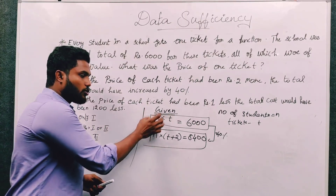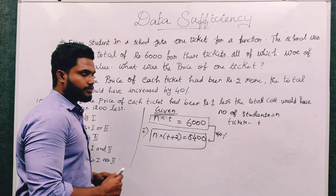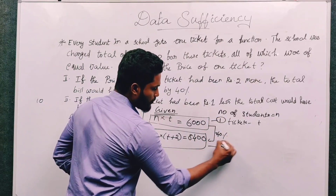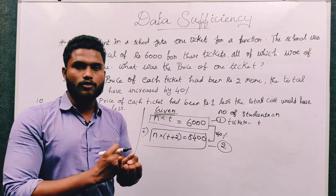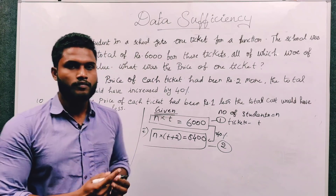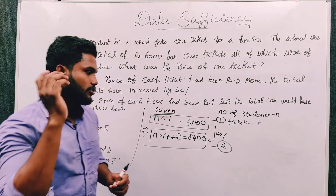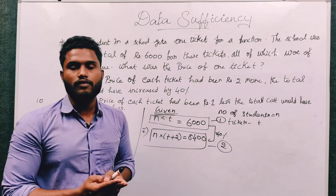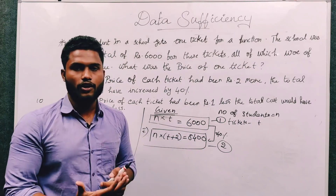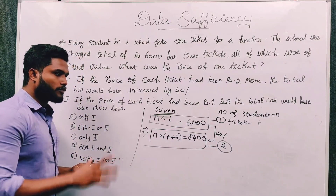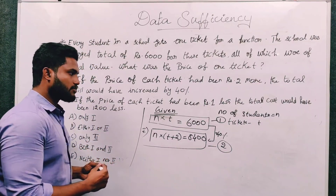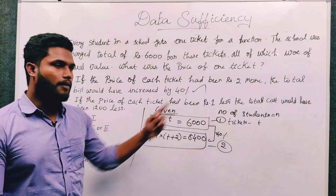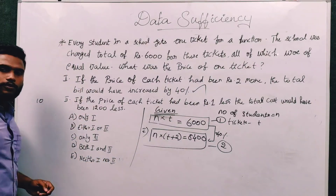This is data sufficiency. There are two unknown values: N and T. So two unknowns require two equations. We can frame two equations and solve to find the value of N and the value of T. With two equations and two unknowns, we can definitely get the values. Statement 1 alone is sufficient.